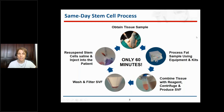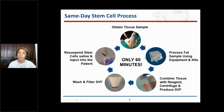We processed the fat to obtain what's called a stromal vascular fraction. The fat was first digested using collagenase, then centrifuged, filtered, and washed, and then the stromal vascular fraction was re-suspended into normal saline for a bolus push inside the patient.